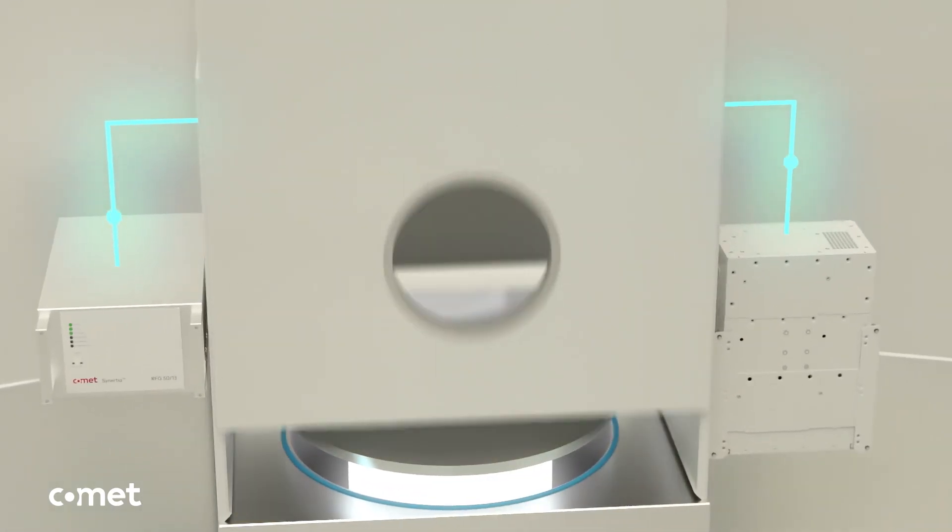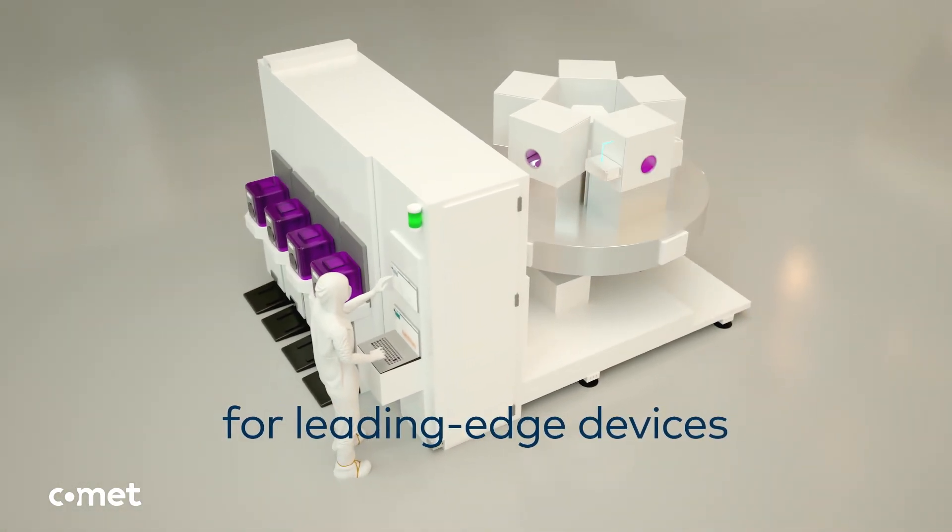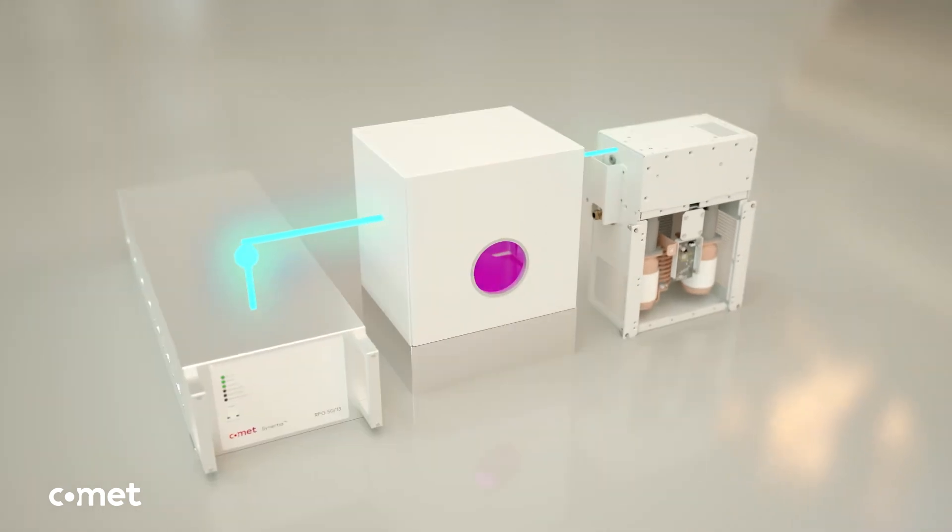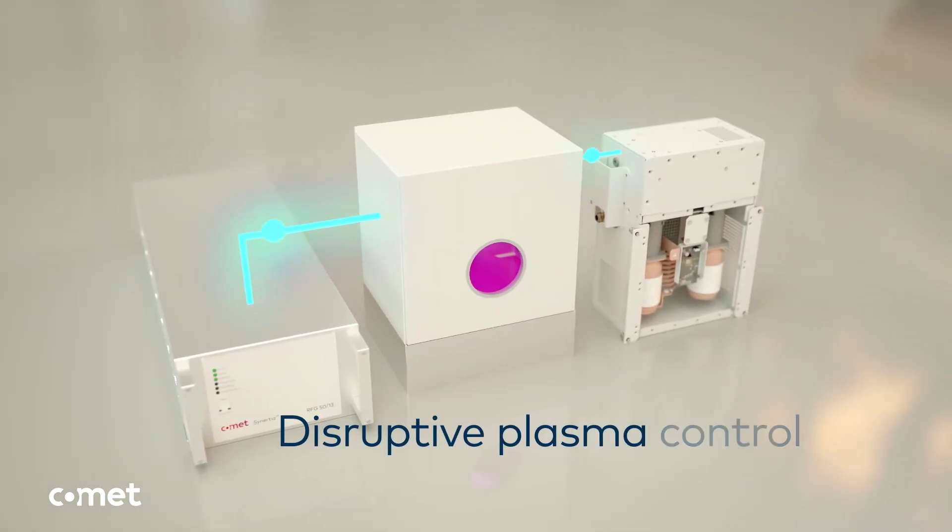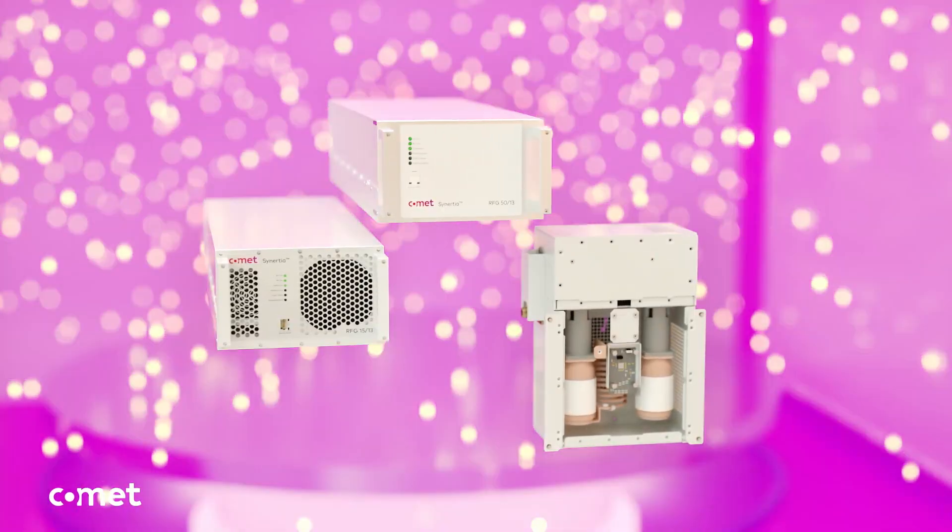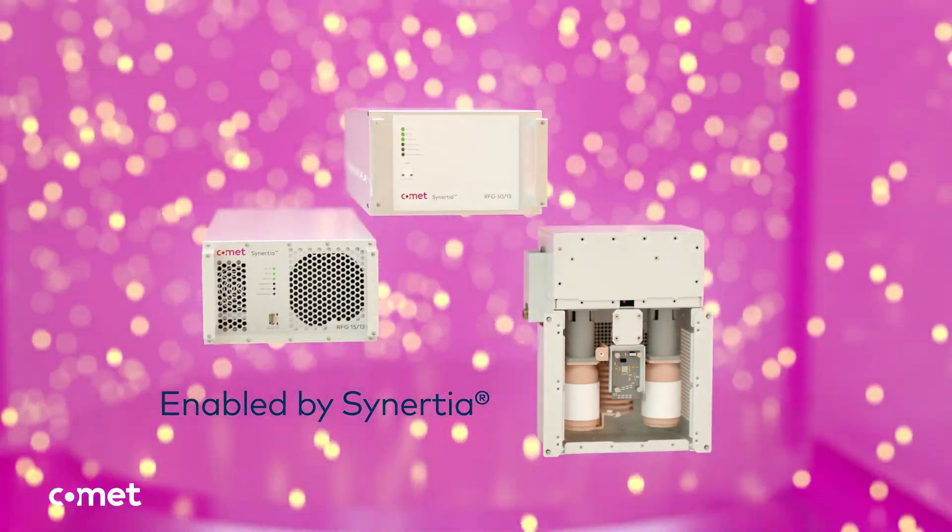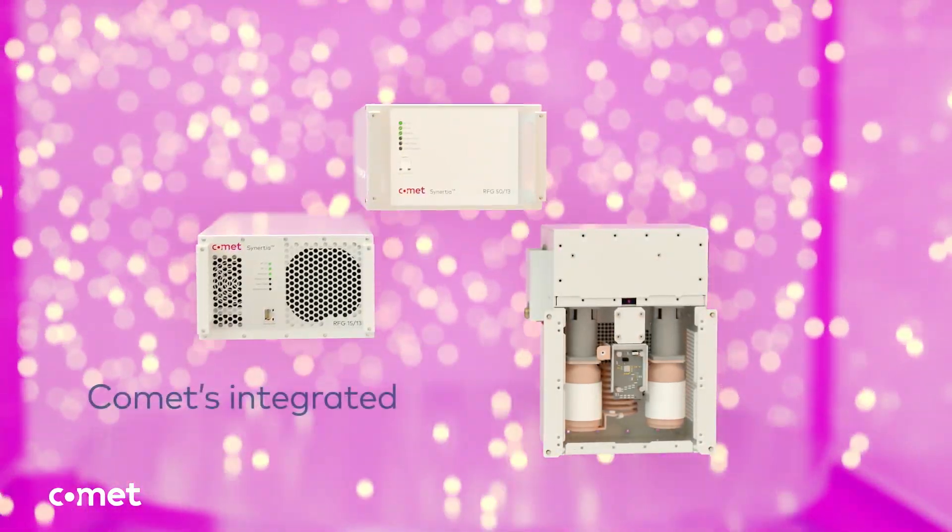Plasma processes take place in process chambers driven by RF power. RF subsystems enable the next generation of higher performing chip manufacturing tools. Disruptive process technology makes wafer processing tools ready for the future. Plasma is controlled by RF generators and RF matching networks.